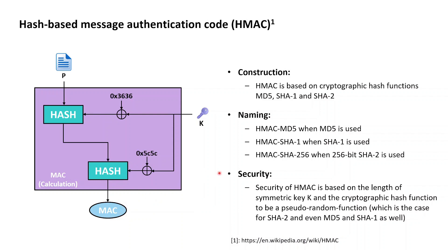From a security point of view, the security of HMACs is based on the length of the symmetric key K used, because short keys allow an attacker to easily figure out the key by trying all available keys until a valid MAC tag can be calculated. The security of HMACs is also based on the property of the underlying hash functions to be random-looking functions — which, very interestingly, even though MD5 and SHA-1 are not collision resistant, is a property that still holds for all three: SHA-2, MD5, and SHA-1.